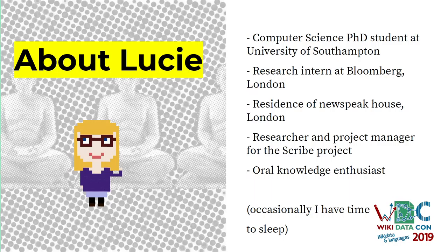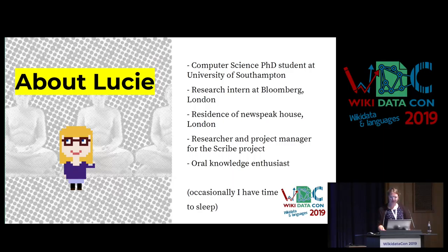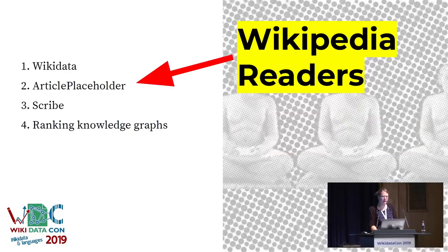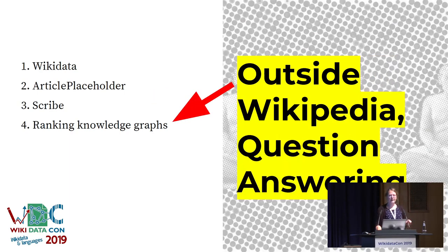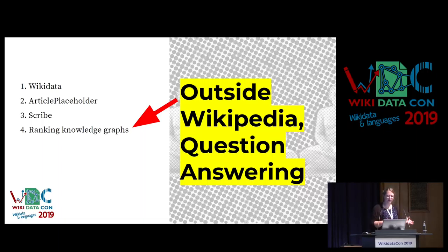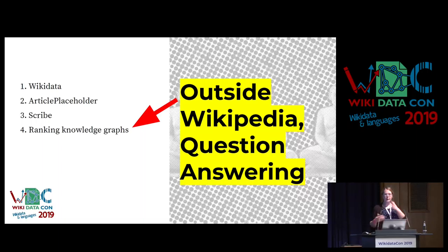If you're interested in any of those things, come talk to me. This is a very open presentation with a few questions in between. I'll run through a lot of things in a very short time. So today we'll cover: a Wikidata introduction, the article placeholder aimed at Wikipedia readers, Scribe aimed at Wikipedia editors, and then one topic from my research using Wikidata for question answering.